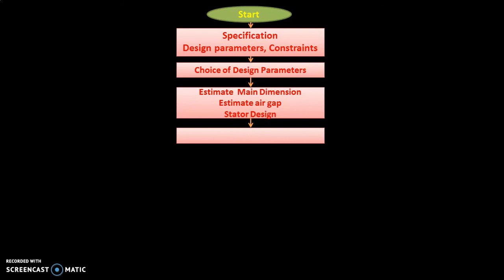After stator design, in the next stage we start our rotor designing. In the rotor, we have rotor winding — whether it is a squirrel cage type or a wound rotor type — and we have rotor core design. To decide the rotor slots, we take the basis of the stator slots. To avoid certain harmonics, we have certain rules to decide the rotor slots. Rotor resistance is very important for starting torque. In the case of a squirrel cage induction motor, we have a short-circuited rotor design with end rings and rotor bars. In the case of wound rotor type, we have slip rings and external resistance can be connected. This way, we have designed our rotor.